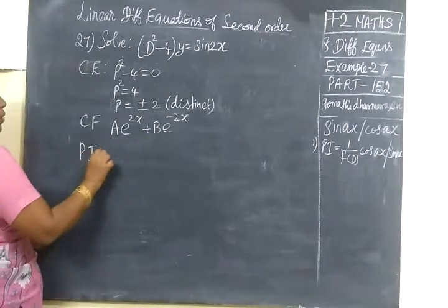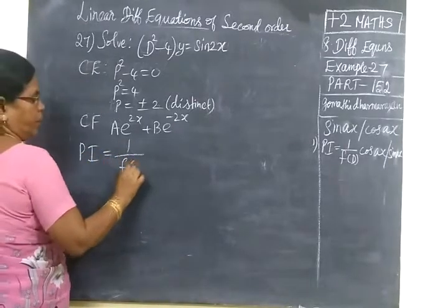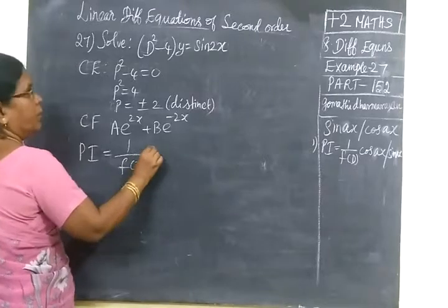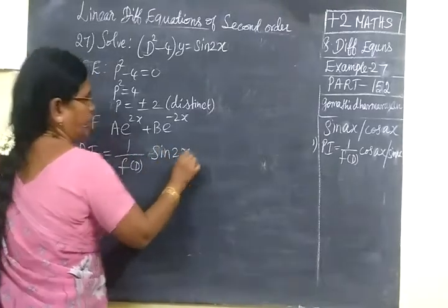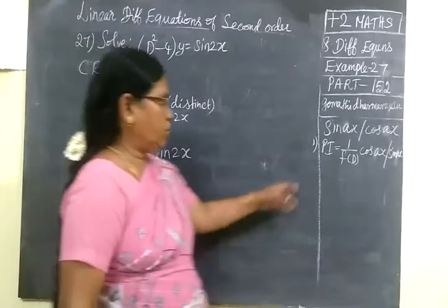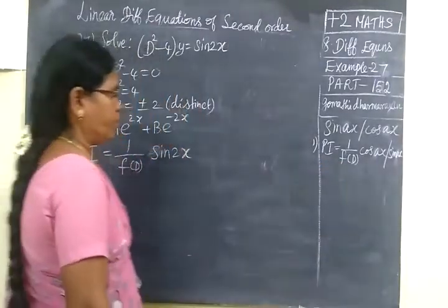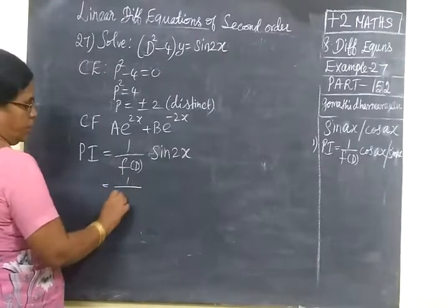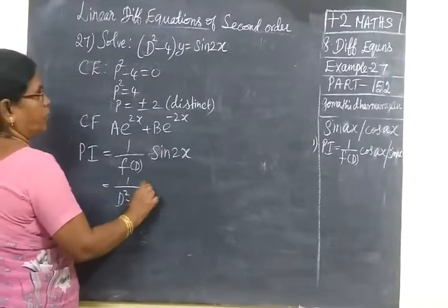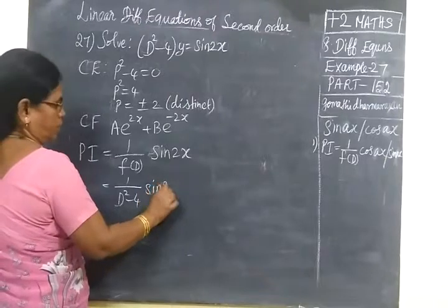Next we have to find particular integral: 1 by f of D, e power alpha x. For sine or cosine particular integral, you write 1 by D square minus 4, then sin 2x.